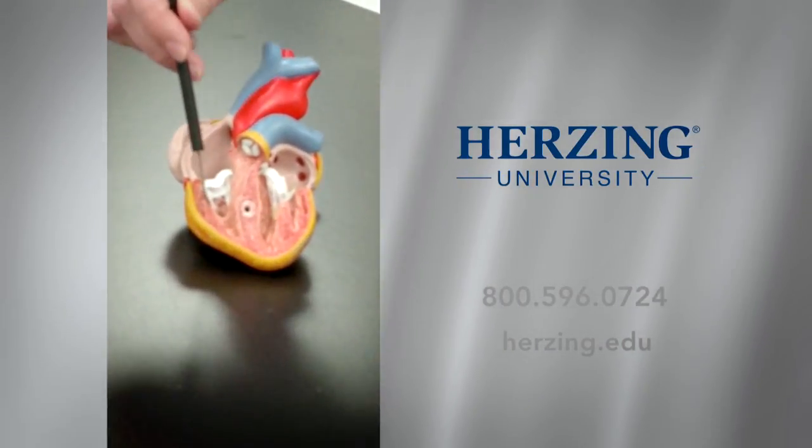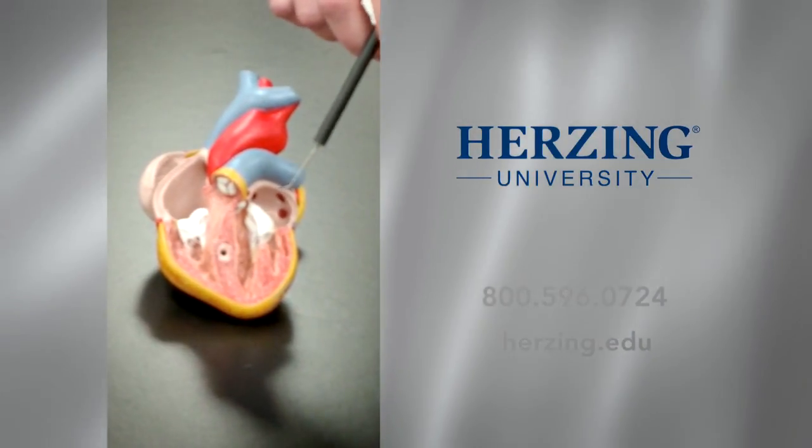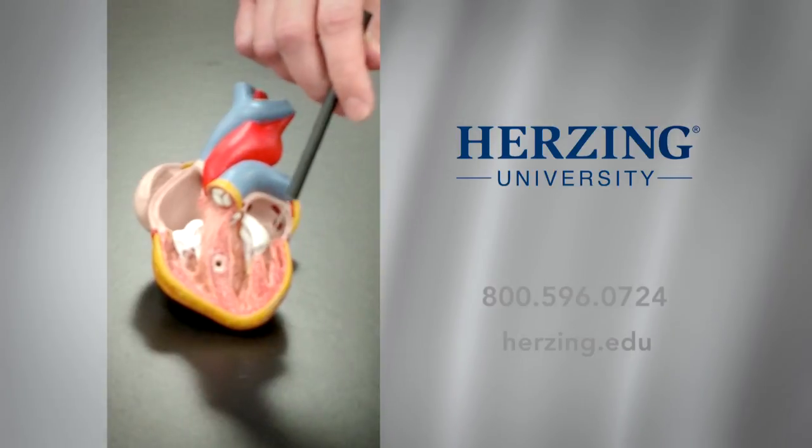It separates the right atrium from the right ventricle, and then the one here on the left side is the bicuspid valve that separates the left atrium from the left ventricle.